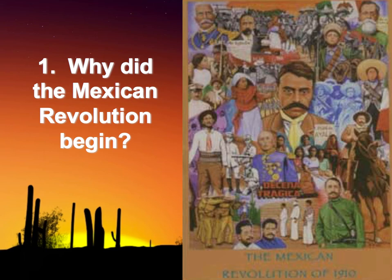The Mexican Revolution is going to start in 1910 and end in 1920. A lot of the issues that led to the revolution breaking out in Mexico are almost like unfinished issues from when Mexico got its independence from Spain — a lot of issues weren't resolved and they come back to the forefront in the Mexican Revolution.